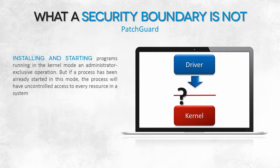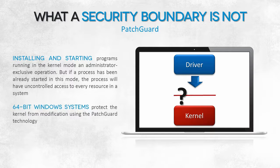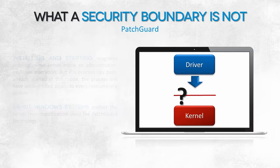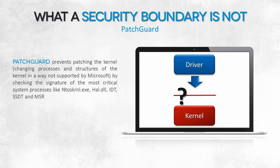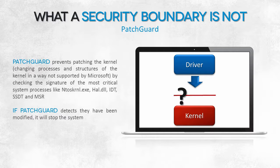PatchGuard is another technology we'll talk about. This technology has been developed to prevent the installation of programs running in the kernel mode. These programs operate at a low level and can directly access other system processes, which means they are able to access computer resources indirectly. PatchGuard is a security solution deployed in 64-bit systems. If PatchGuard detects a modification of the system processes that is unsupported by Microsoft, the system halts as a stop error is reported.